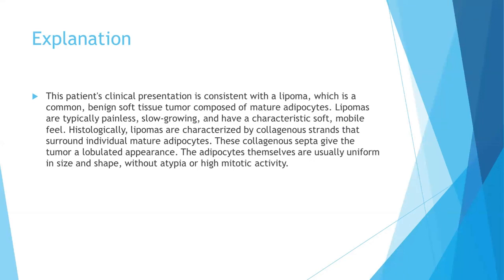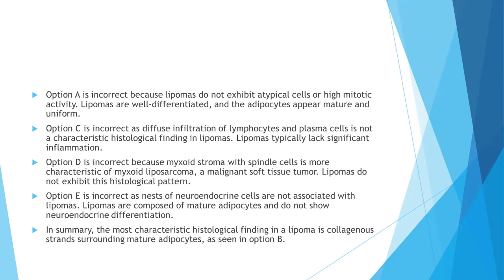Option A is incorrect because lipomas do not exhibit atypical cells or high mitotic activity — they are well differentiated and the adipocytes appear mature and uniform. Option C is incorrect as diffuse infiltration of lymphocytes and plasma cells is not a characteristic finding; lipomas typically lack significant inflammation. Option D is incorrect because myxoid stroma with spindle cells is more characteristic of myxoid liposarcoma, a malignant tumor. Option E is incorrect as nests of neuroendocrine cells are not associated with lipomas, which are composed solely of mature adipocytes.